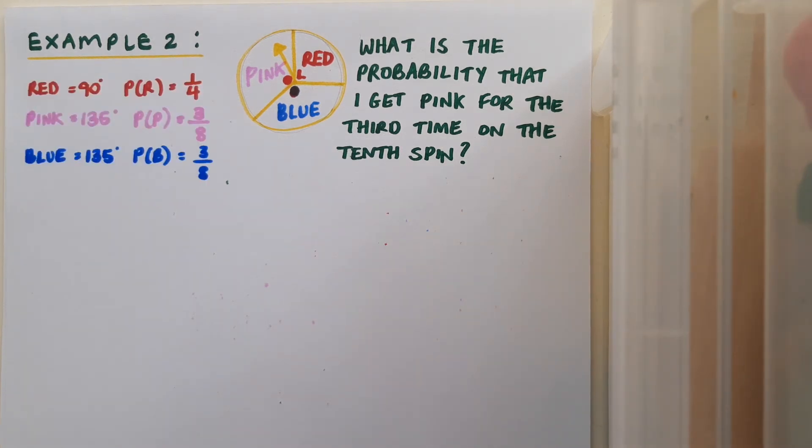So my angles are 90, 135, and 135. My probabilities are for red, one quarter, for pink, three eighths, and for blue, three eighths.